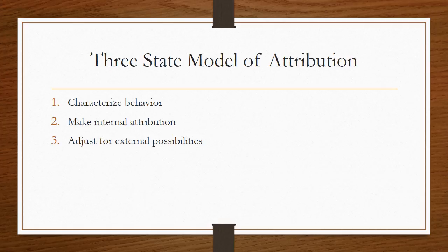Now we'll talk about the three-stage model of attribution. This model says the first thing we do is decide what the behavior is, then we make an internal attribution, and then we adjust for some kind of external possibility. This is similar to anchoring and adjustment from a previous chapter — you anchor on the internal attribution and then adjust.